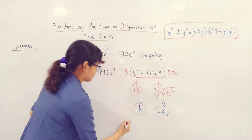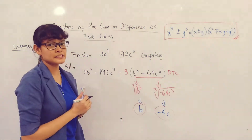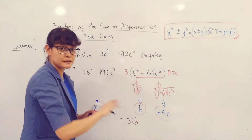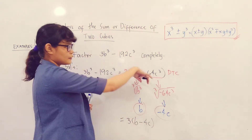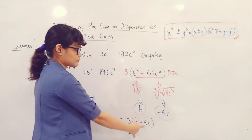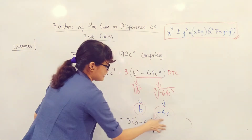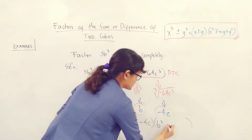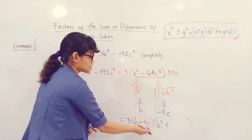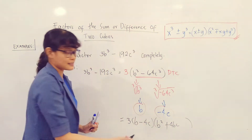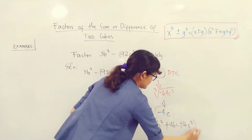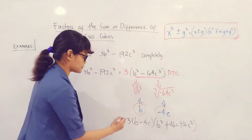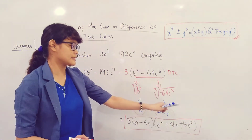Now express as a product. Since the original operation is minus, the binomial factor is b minus 4c. For the trinomial factor: square b to get b squared, opposite sign gives plus, product of b and 4c is 4bc, and the square of 4c is 16c squared. Therefore, the factor form of 3b cubed minus 192c cubed is 3 times (b minus 4c) times (b squared plus 4bc plus 16c squared).